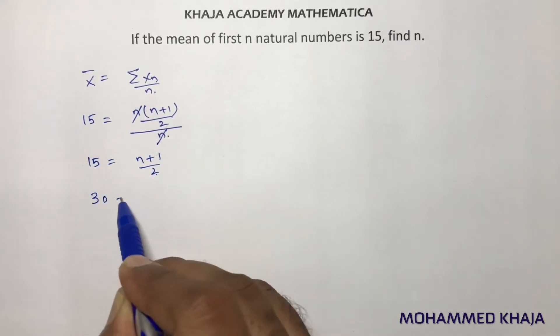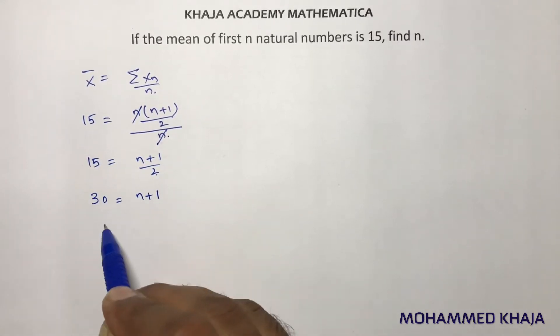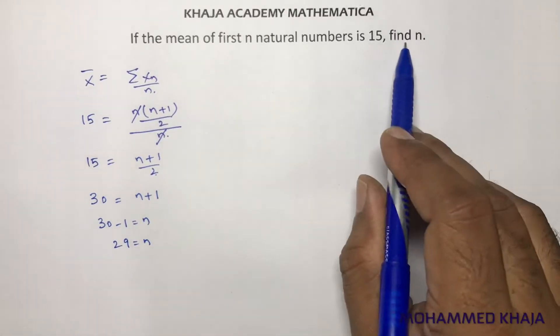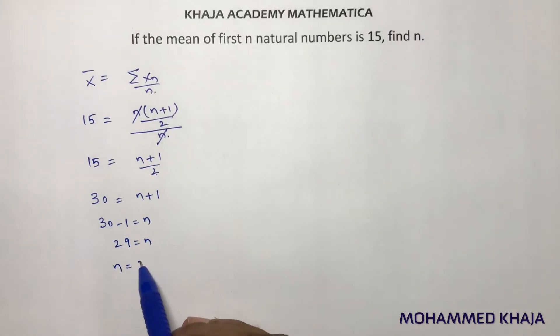2 times 15, 30 is n plus 1. So 30 minus 1 equals n. 29 equals n. The value of n is 29.